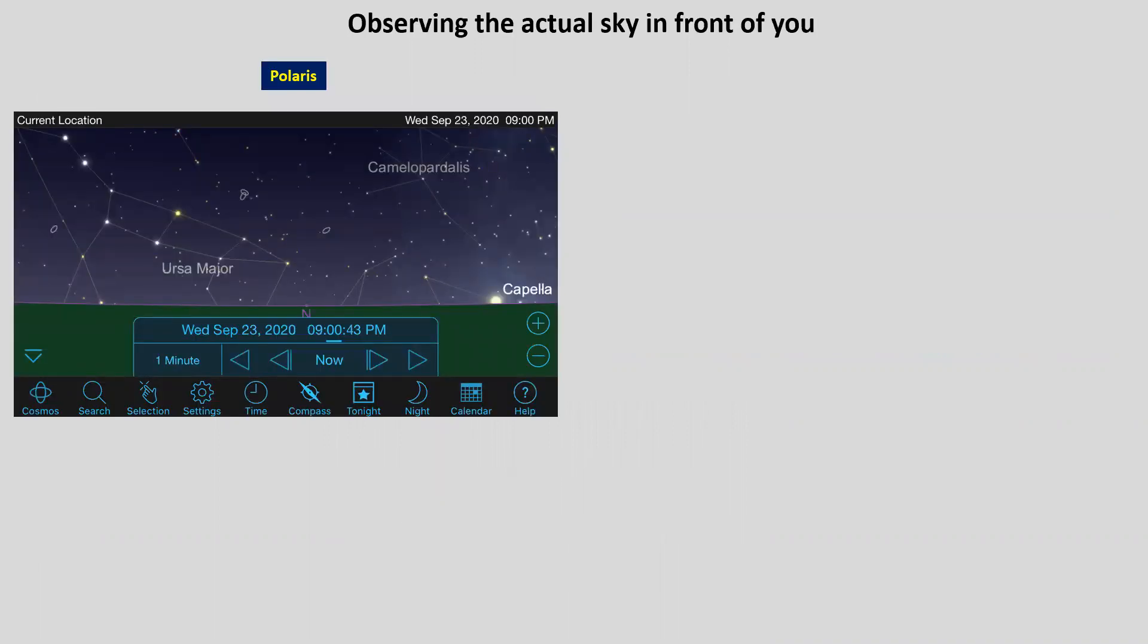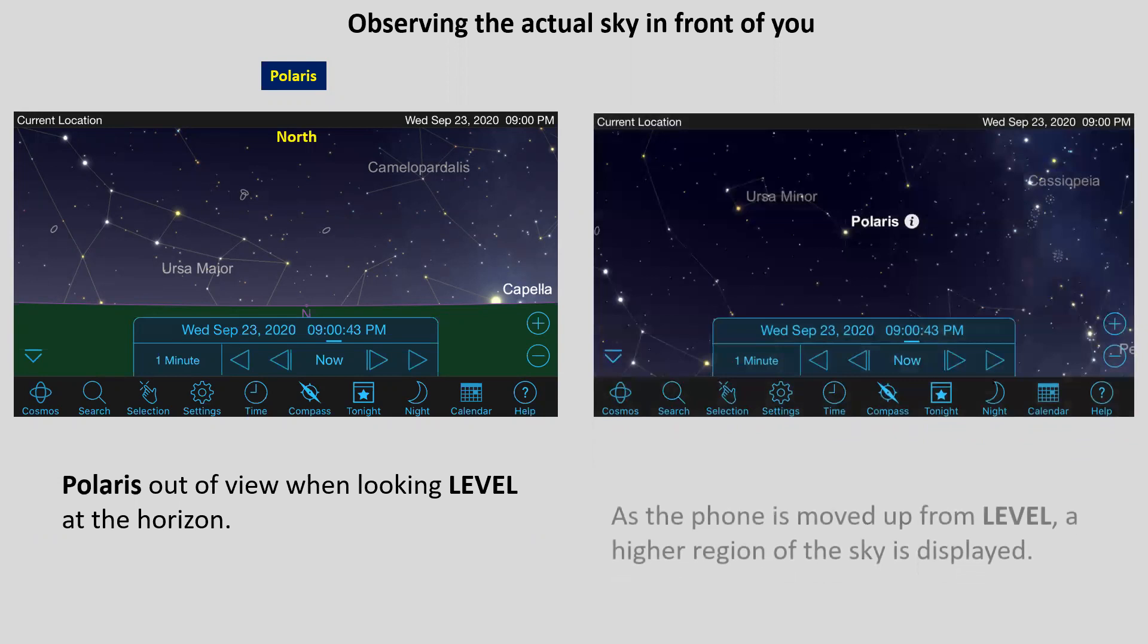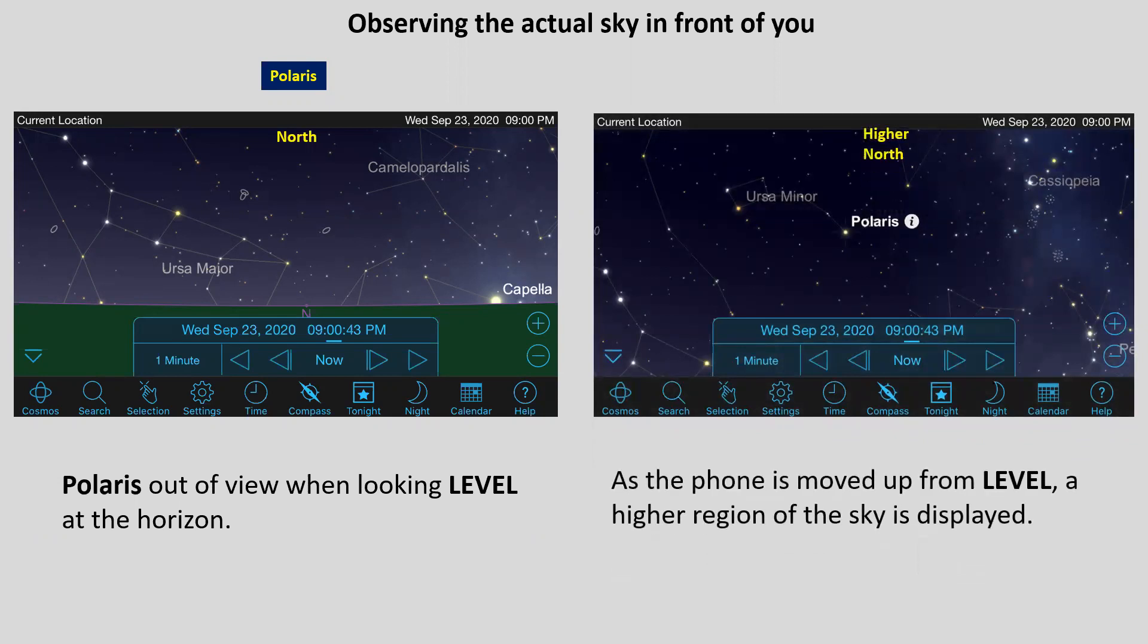Now, let's observe the actual sky. If you, let's say that you're viewing north, and you want to look for Polaris. Polaris is the north star, but because you have the horizon in a little bit below the middle of your display, you won't see Polaris because it's out of the field of view. However, if you simply raise the phone, look higher north, you'll notice that Polaris then is in the field of view. So by moving the phone up and down, left and right, you're going to change what it is that you see.